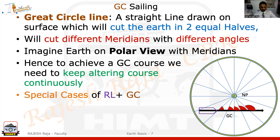There are some special cases of rhumb line plus GC where both are combined in just two cases. One case is if you sail along any meridian — from the north pole to the south pole or vice versa — with courses 000 and 180. In that case, every meridian sailing is a rhumb line as well as a great circle, if you go by the definition.